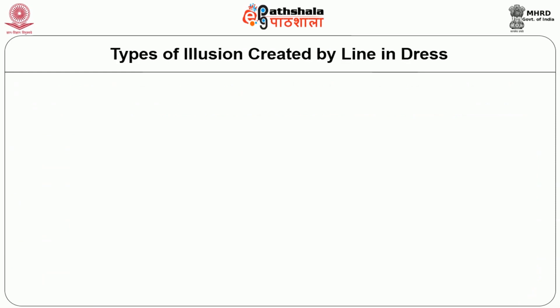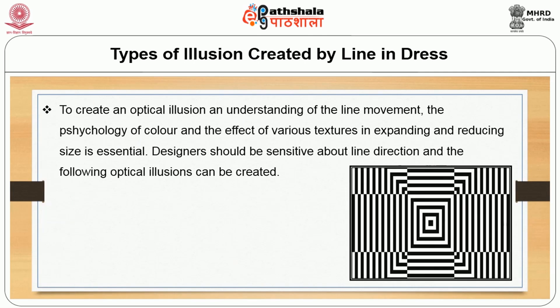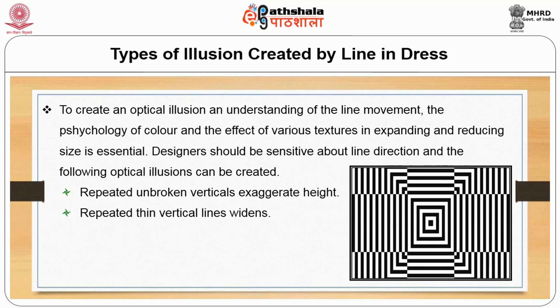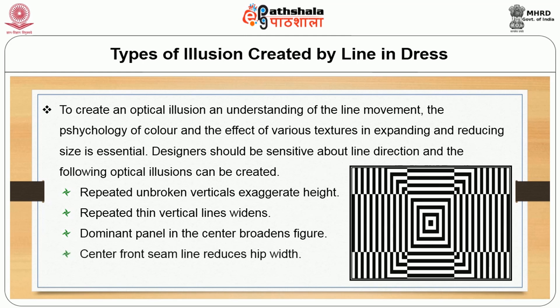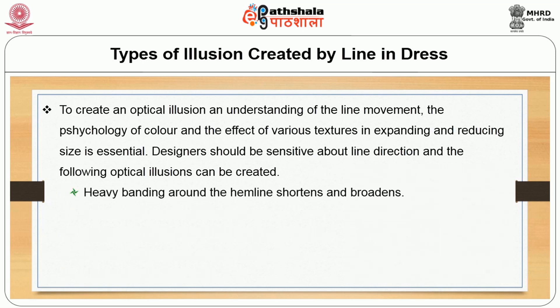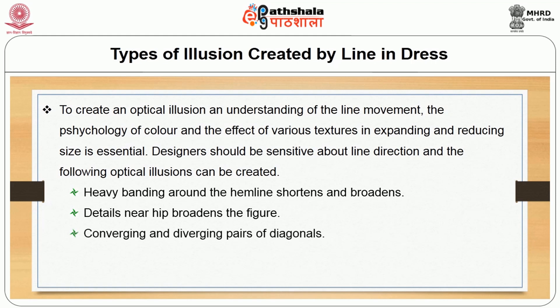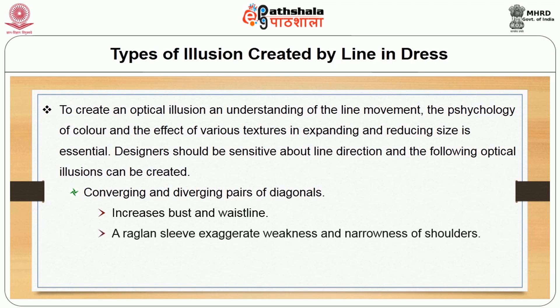Now let us see the types of illusions created by line in dress. To create an optical illusion, an understanding of the line movement, the psychology of color and the effect of various textures in expanding and reducing the size is essential. Designers should be sensitive about line direction. The following optical illusions can be created by the use of lines: repeated unbroken verticals exaggerate height; repeated thin vertical lines widens; a dominant panel in the center broadens the figure; a center front seam line reduces hip width; side flares broaden the hips; heavy banding around the hemline shortens and broadens the figure; details near hip broadens the figure. The converging and diverging pair of diagonals will broaden the shoulder, increase the hip and seam lines, and increase the bust and waist lines. A raglan sleeve also exaggerates weakness and narrowness of the shoulders.